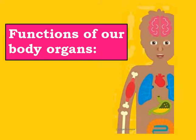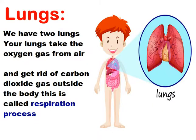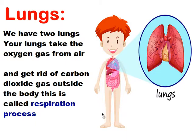Number one: the lungs. We have two lungs that exist in the upper part of the body, in an area called the chest area. The function of the lungs is to help you take in the oxygen you breathe from the air and also get rid of the carbon dioxide gas outside the body. This is known as the respiration process.